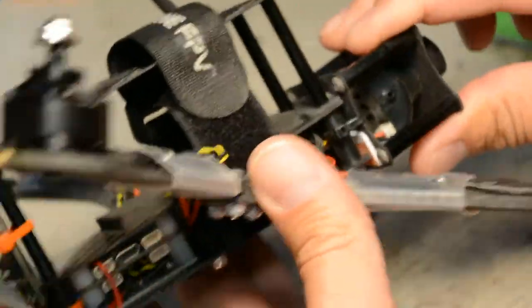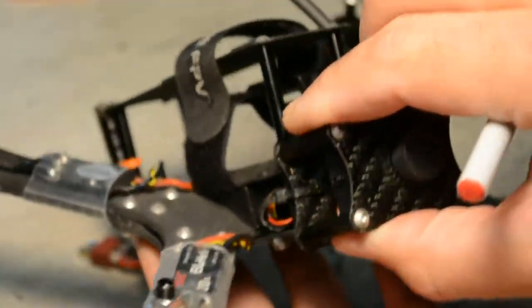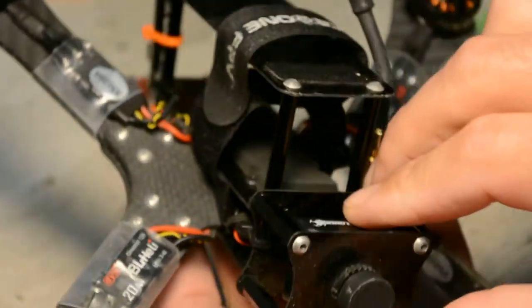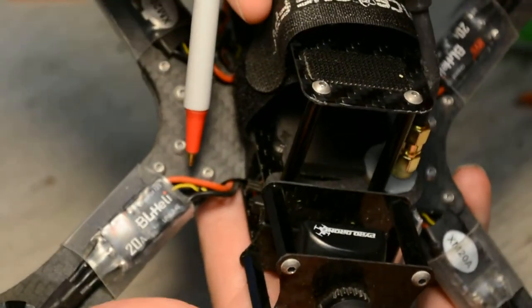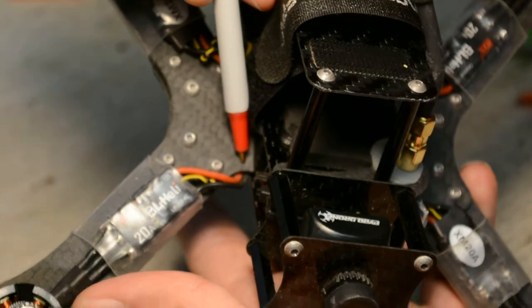The wires for the front ESCs, here's the front, they're run between the sandwich here.